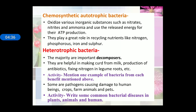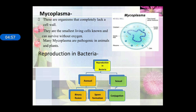Chemosynthetic autotrophic bacteria oxidize various inorganic substances such as nitrate, nitrite, and ammonia, and use the released energy for ATP production. Heterotrophic bacteria are the majority and are important decomposers. They are useful in making curds from milk, production of antibiotics, and fixing nitrogen. Mycoplasma are organisms that completely lack a cell wall; they are the smallest living cells — PPLO, pleuro-pneumonia-like organisms. Reproduction in bacteria may be asexual — binary fission or spore formation — or sexual, by conjugation.